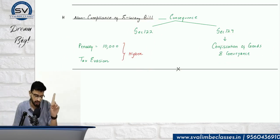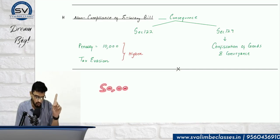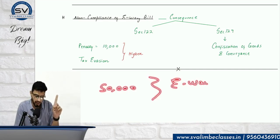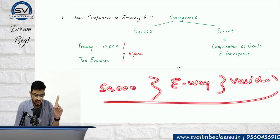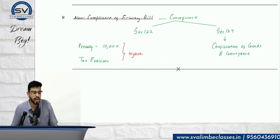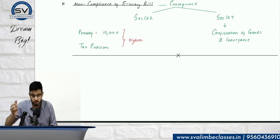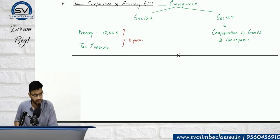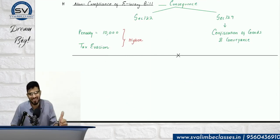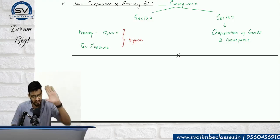Main focus areas: when e-way bill is required, the ₹50,000 value question, when e-way bill is NOT required, and validity period — all are 3-star exam topics. This was the e-way bill topic-specific revision. I hope this was useful. We spent about 40-45 minutes on this. Bye-bye.